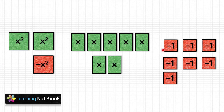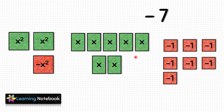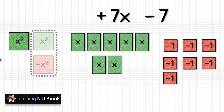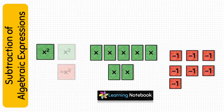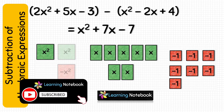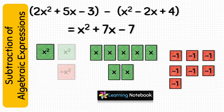Now let's count the like terms. Here we have 7 red small squares, which means minus 7. Next, count the next like terms and we have 7x. Then, in the next term, we first have to cancel the red and green cutouts — that is, minus x squared and x squared — so we are left with only 1x squared. Therefore, the difference of the two given algebraic expressions is x squared plus 7x minus 7. This is how we can do subtraction of two given algebraic expressions with the help of this activity.